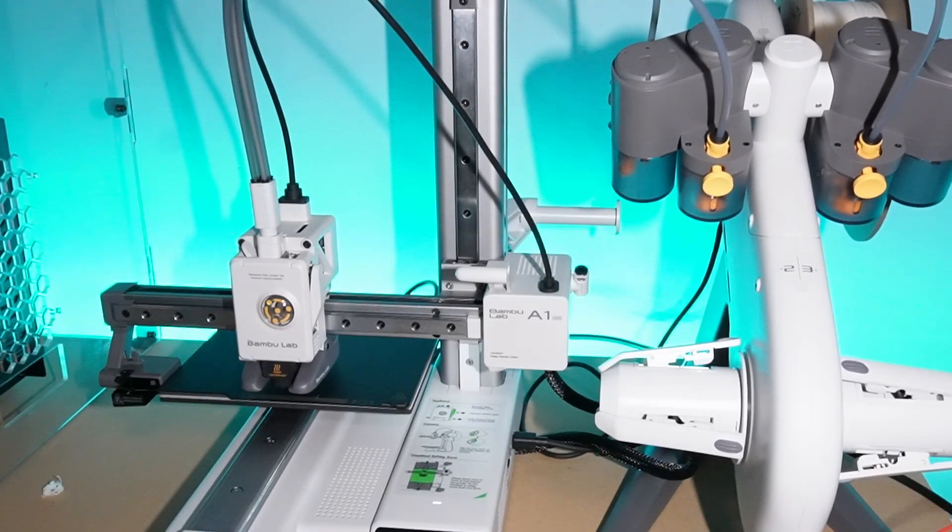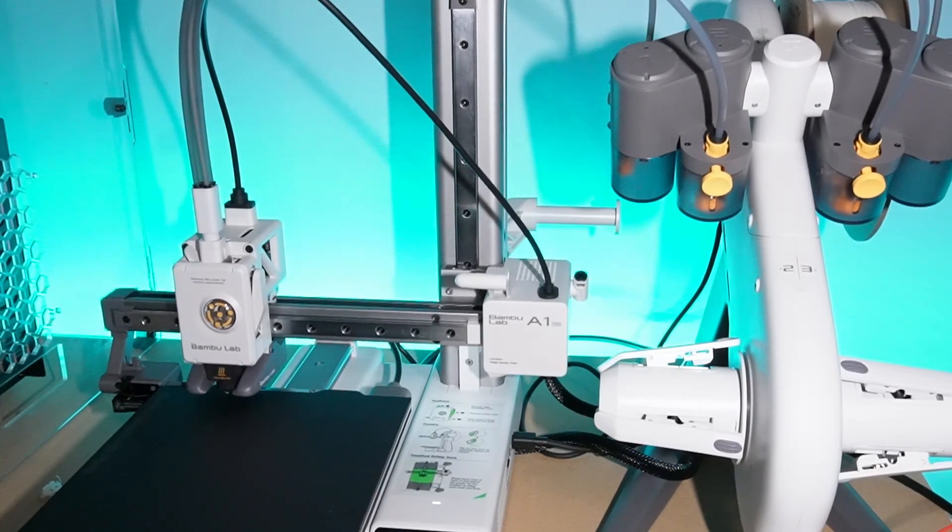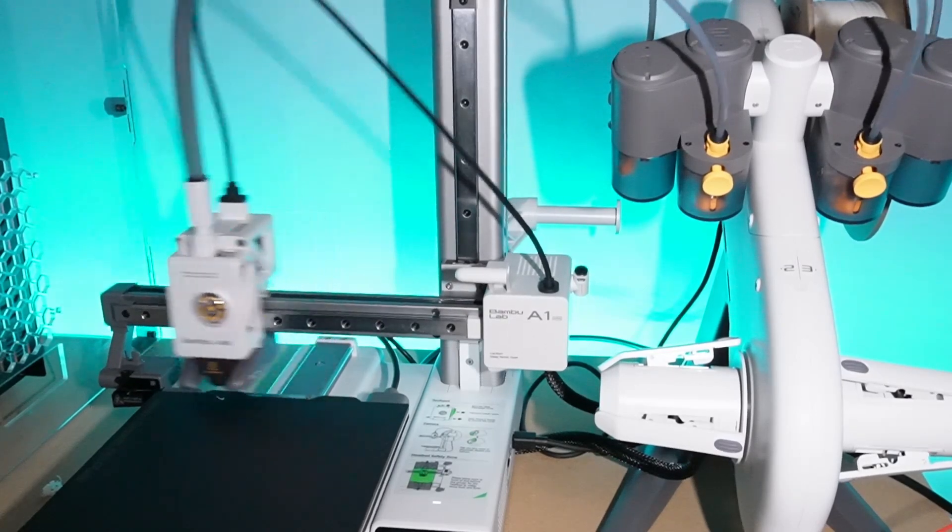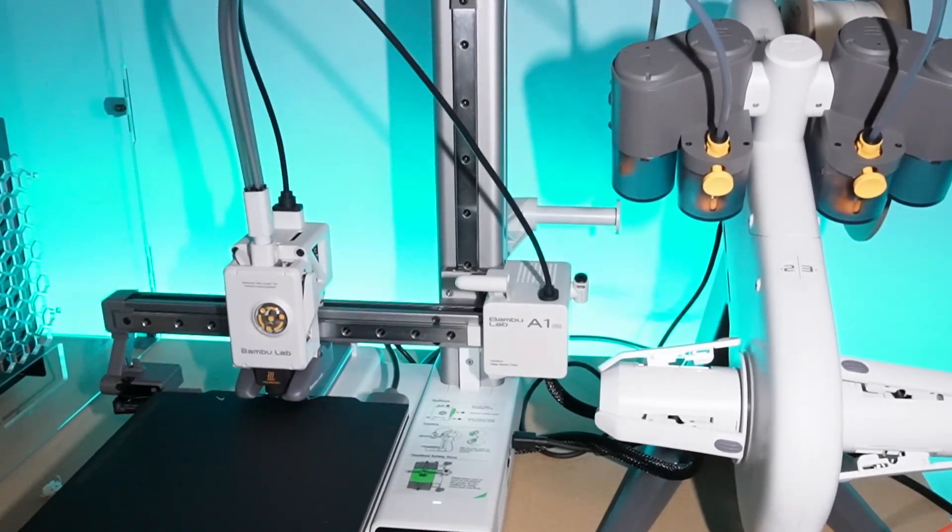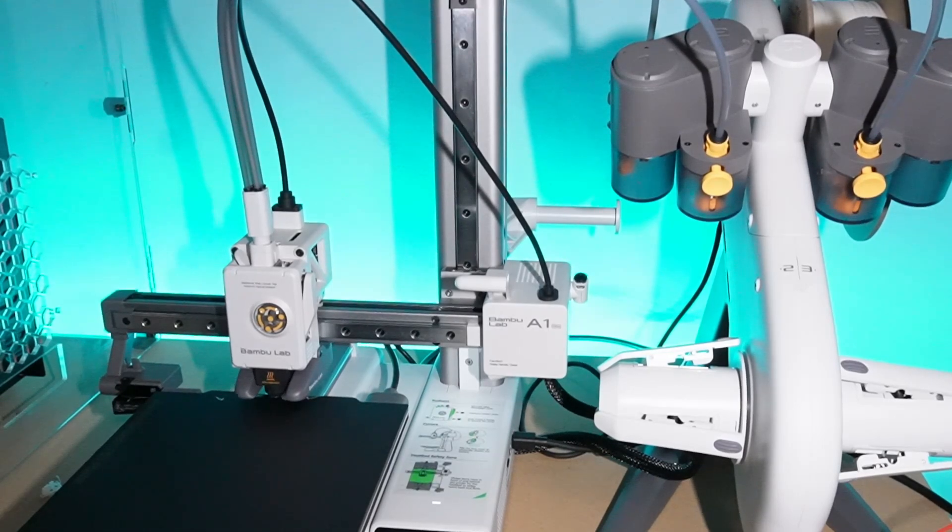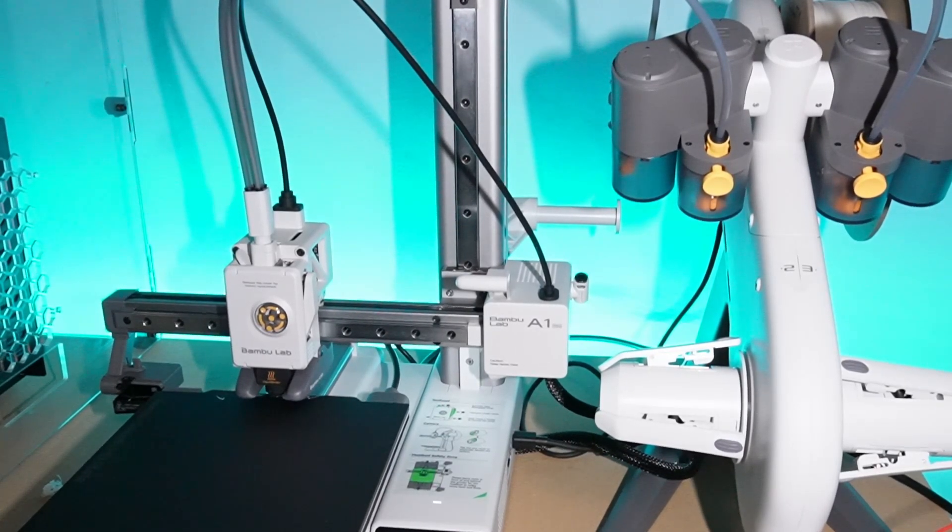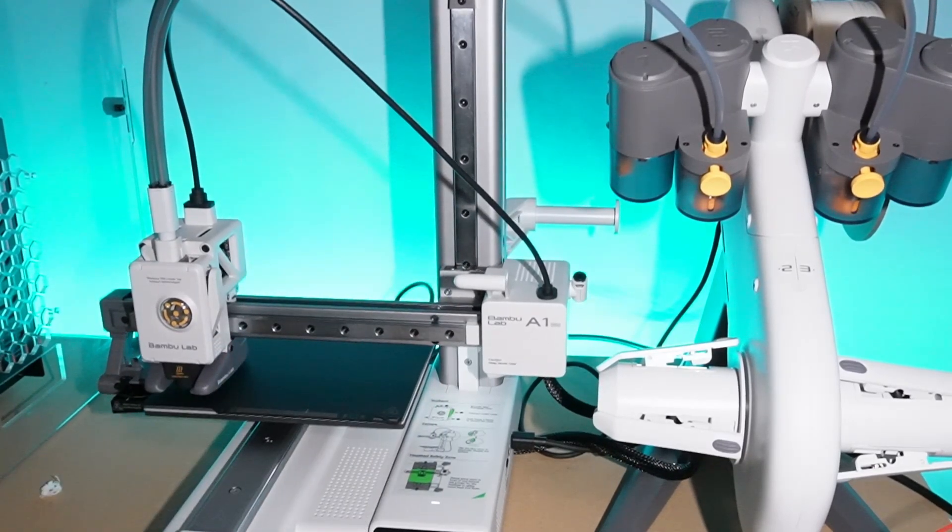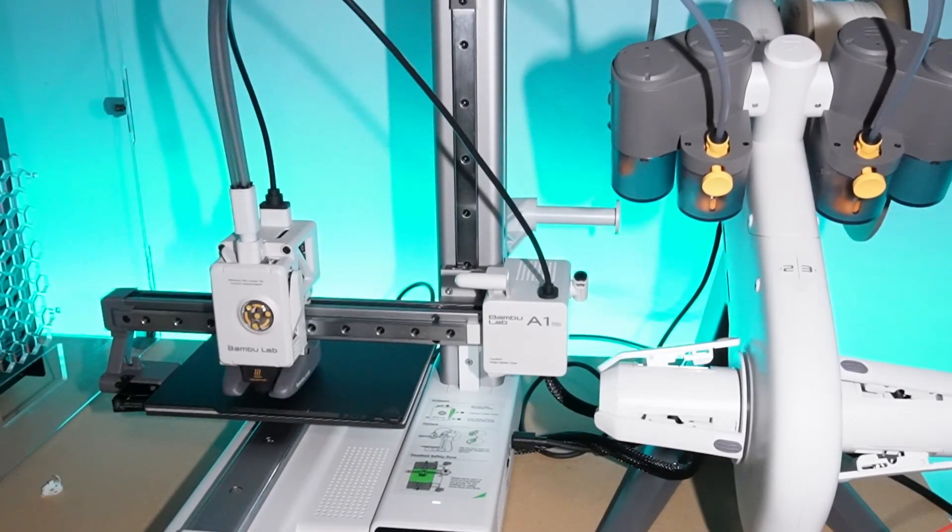As you guys can hear now, it's just doing the calibration. Noise cancellation happens once you initially set up the printer. This is just a calibration before a print. I'm trying to print a benchy, a speed benchy that is. And I'm going to bump up the speeds to ludicrous mode. We're going to test the machine to the limits. As you guys can see, the bed leveling system is really nice.